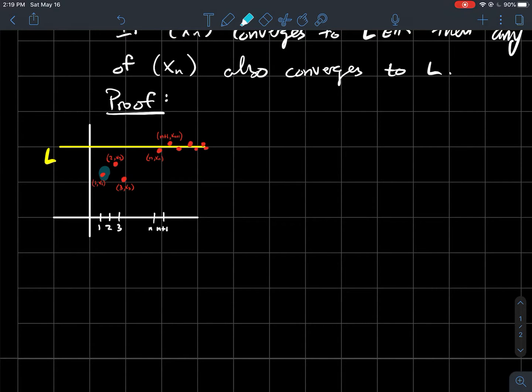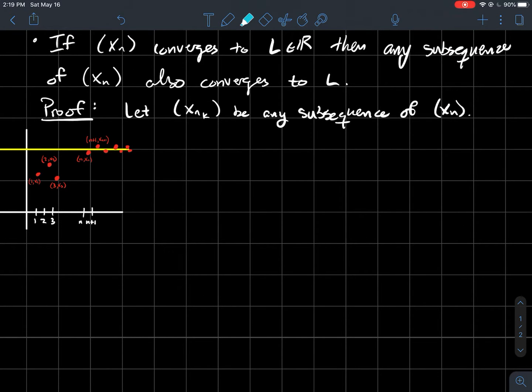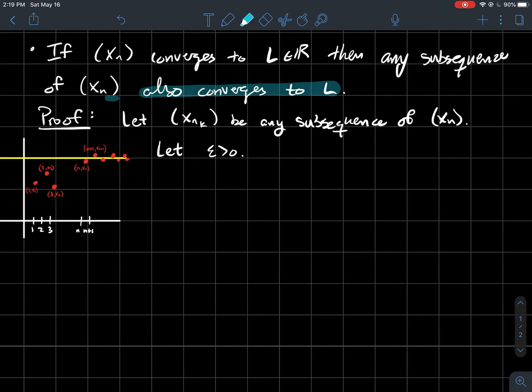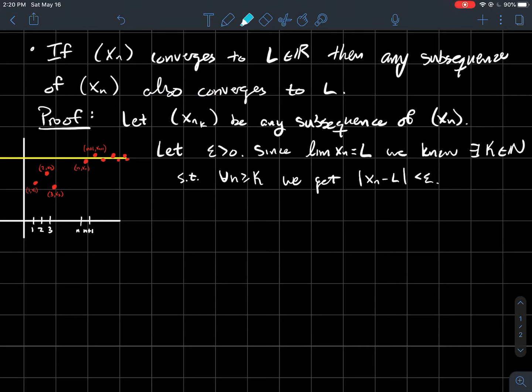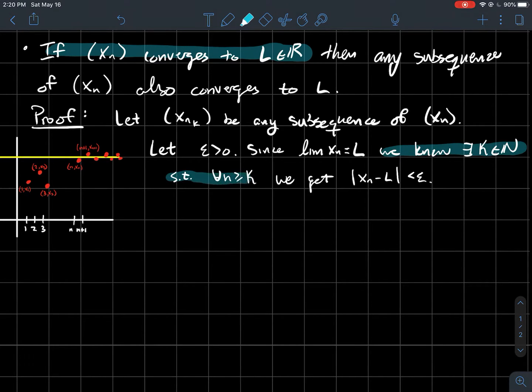So how do you kind of prove that a little bit more formally? The proof is formal, right? So let's let xnk be any subsequence of xn. So if I want to show that xnk also converges to L, well I'm going to do that with my epsilon definition. So let's let epsilon be positive. And what else do I know? Well I get to assume that xn converges to L. So there exists some natural number capital K, such that for all indices n larger than or equal to that capital K, I know that the terms in my sequence are within epsilon of L.